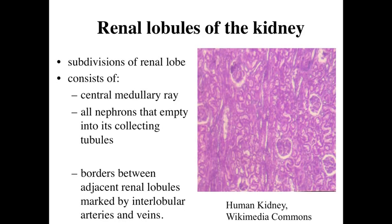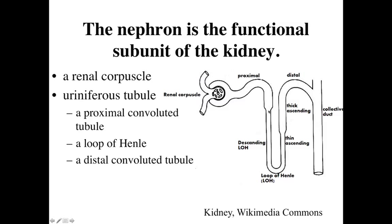Moving back up into the cortex, subdivisions of the renal lobes are going to be the renal lobules. What's defined is a central medullary ray. We can see collecting tubules running up and down at various positions, all running roughly parallel to one another — these are the central medullary rays. Then we have all of the nephrons, with glomeruli and renal corpuscles with proximal convoluted tubules all twisted around, ultimately draining into a central medullary ray. So the nephrons and the collecting tubules and collecting ducts within the medullary ray represent the renal lobules.